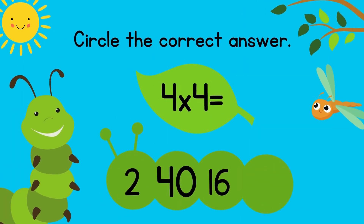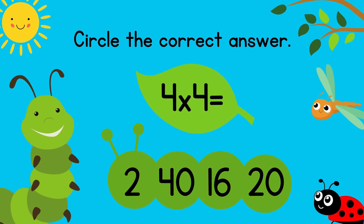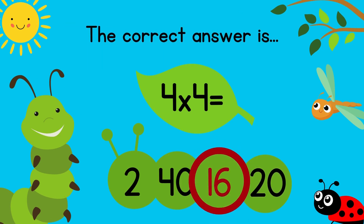Circle the correct answer. 4 times 4 equals? The correct answer is 16. Excellent!